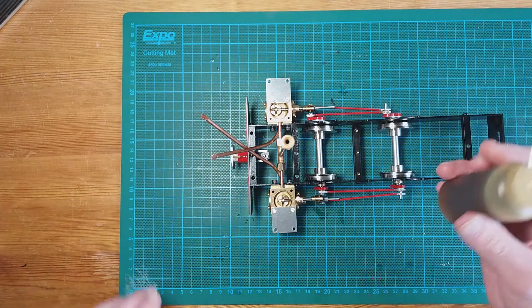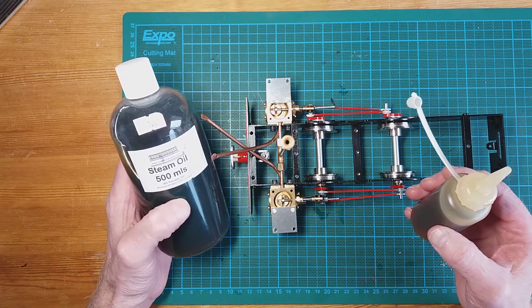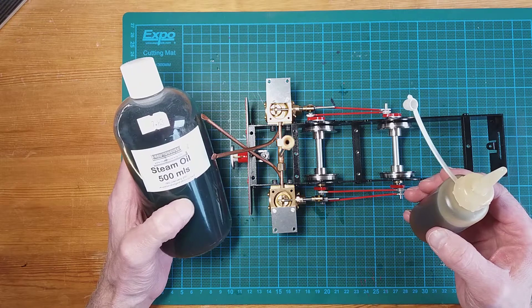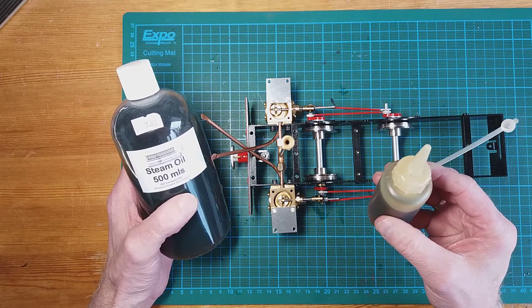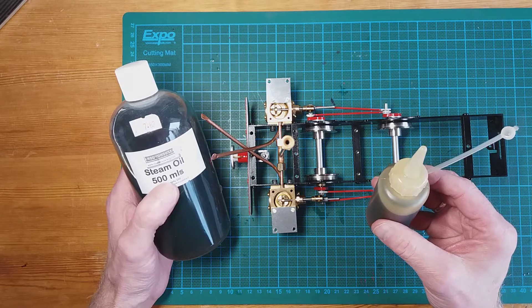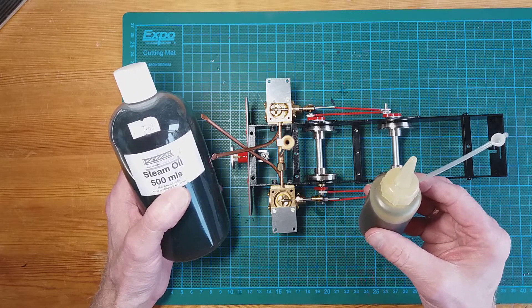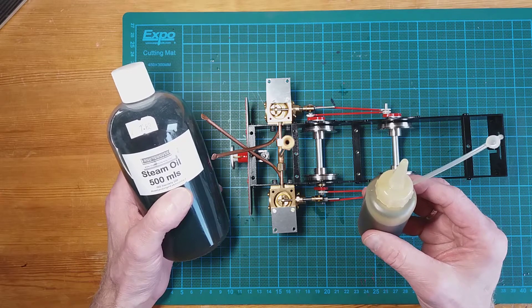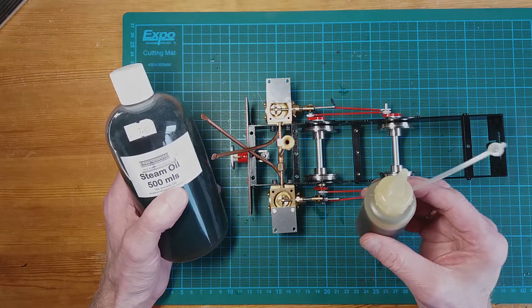So that's Roundhouse steam oil, ISO viscosity 220. I'm sure you can get this steam oil at another source, but I like to use the Roundhouse one just to make sure. In all their documentation they hammer on about using the right steam oil.